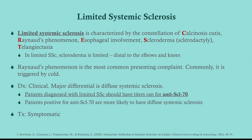Limited systemic sclerosis is characterized by the CREST constellation: Calcinosis, Raynaud's, Esophageal involvement (which may be GERD or dysphagia), Sclerodactyly, and Telangiectasia. Raynaud's phenomenon is probably the most common presenting complaint — it's usually triggered by cold. It is vasospasm. The diagnosis here is clinical; just have a general idea of the CREST symptoms.